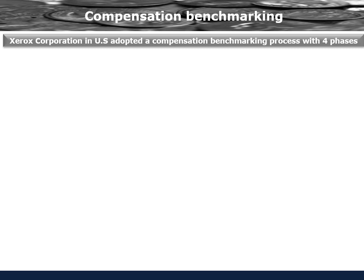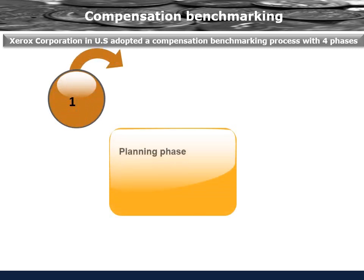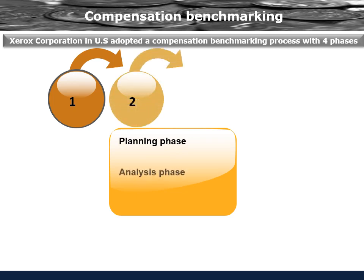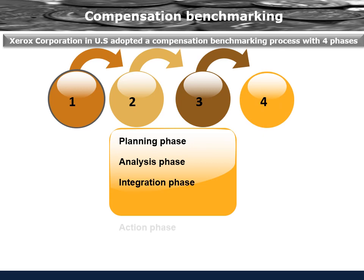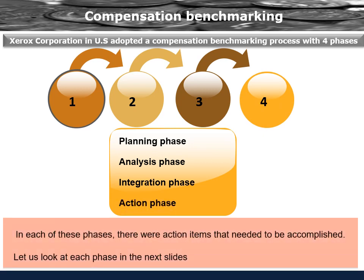Compensation Benchmarking: Xerox Corporation in the US adopted a compensation benchmarking process with four phases — Phase 1: Planning, Phase 2: Analysis, Phase 3: Integration, and Phase 4: Action. In each of these phases, there were action items that needed to be accomplished. Let us look at each phase in the next slides.